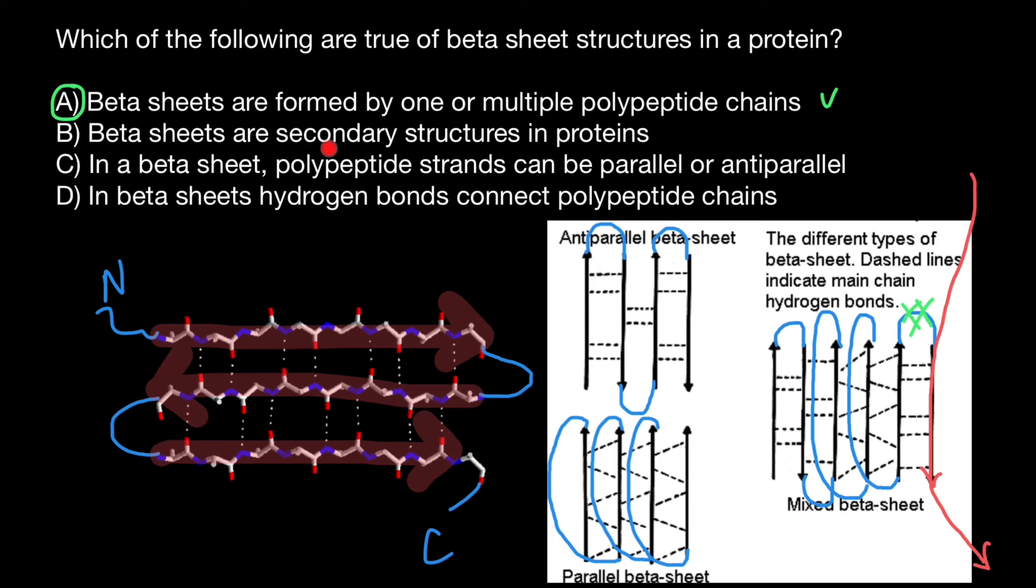There are two types of secondary structures, alpha helix and beta pleated sheets. So this is also correct statement. We can circle this statement as well. And statement C, in beta sheet, polypeptide strands can be parallel and anti-parallel. And this is also correct statement. So we can circle this statement.